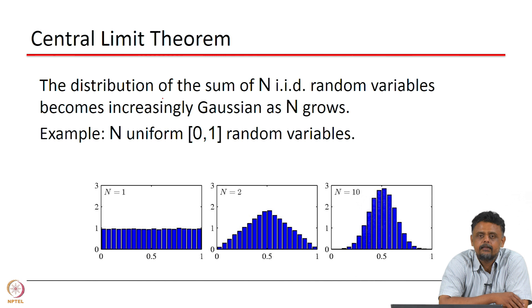So what does the Central Limit Theorem state? Now that we are familiar with Gaussian distribution and the Bernoulli distribution, what it says is that the distribution of the sum of N independent and identically distributed random variables becomes increasingly Gaussian.